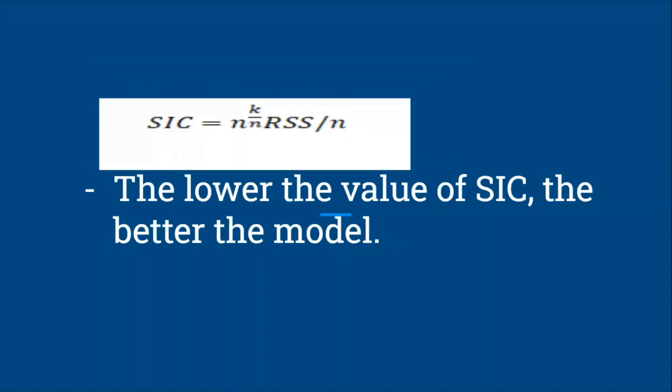Next is the Schwarz information criteria, SIC. The formula for SIC is n raised to the power k upon n times residual sum of squares divided by n. Here, n is the number of observations and k is the number of regressors including the intercept, and RSS is the residual sum of squares. Like AIC, the lower the value of SIC, the better the model.